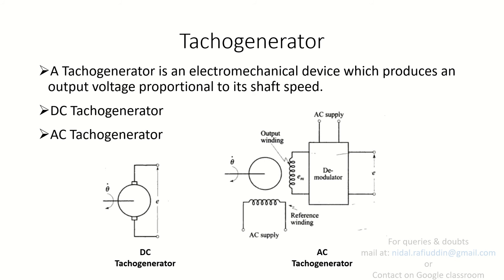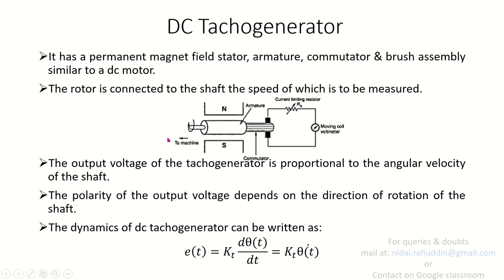These are the two devices — the DC and AC Tachogenerators — which are used to measure the error proportional to the mechanical speed given as input. The DC Tachogenerator has a permanent magnet field stator and an armature with a commutator and brush assembly, similar to a DC motor.